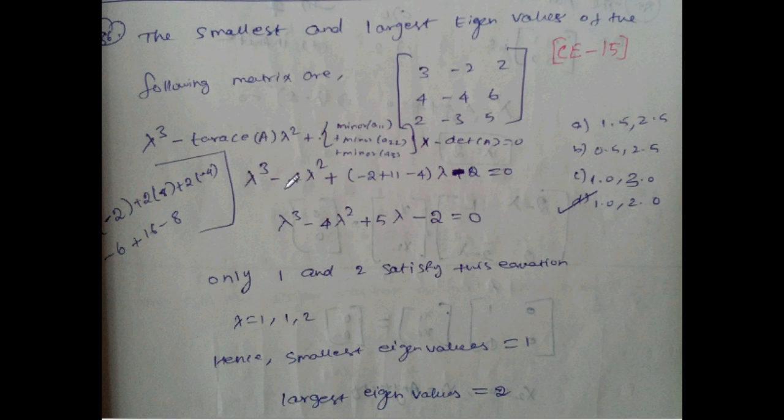Lambda cubed minus, minus 4, 3 plus 5, 8 minus 4, 4, then 3. This column and this row eliminate cross multiply. Then this row and this column eliminate cross multiply. Then this column and this row eliminate cross multiply. Substitute value minus 2, plus 11 minus 4 lambda. Then determinant will check minus 2.